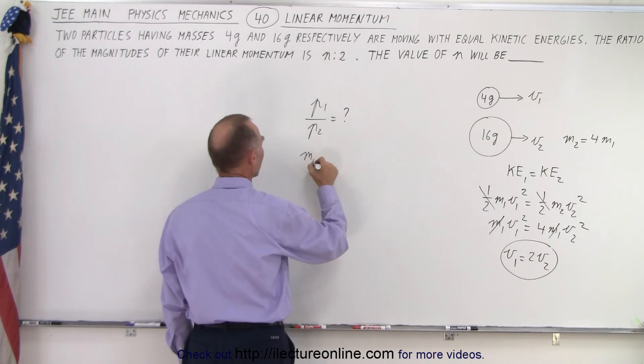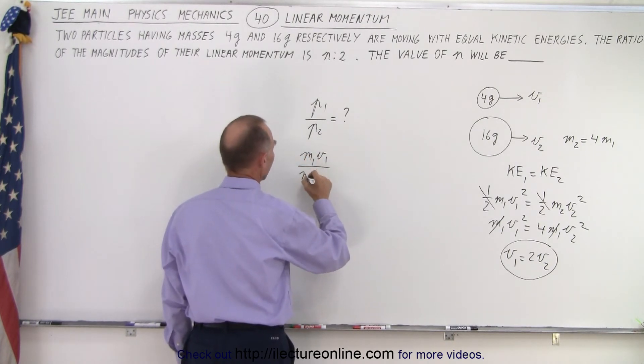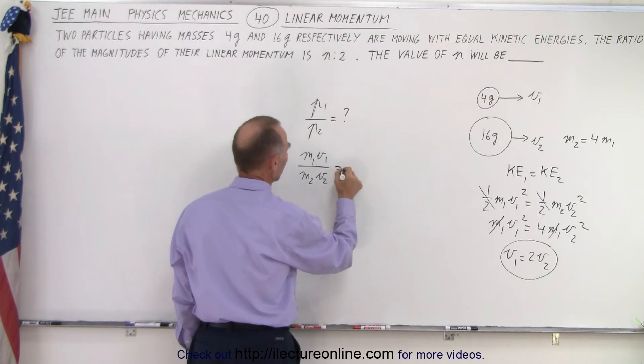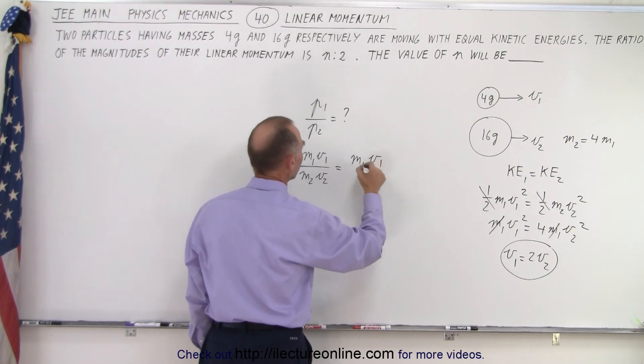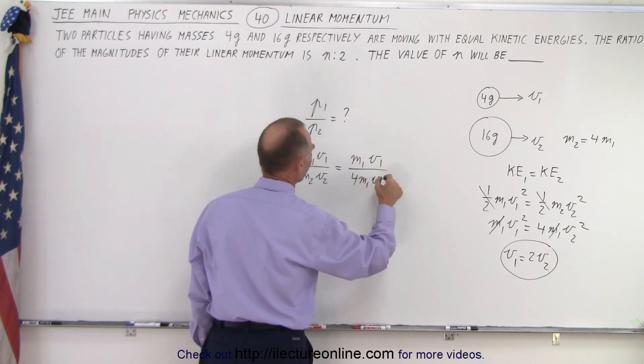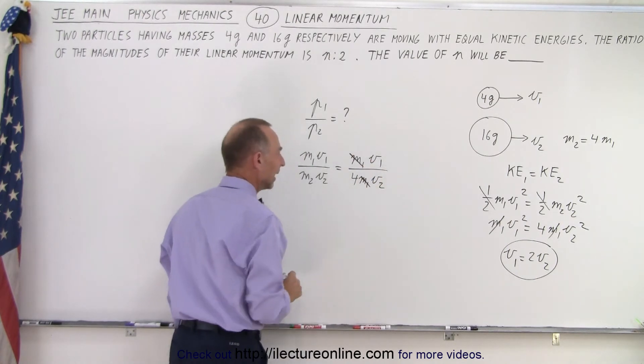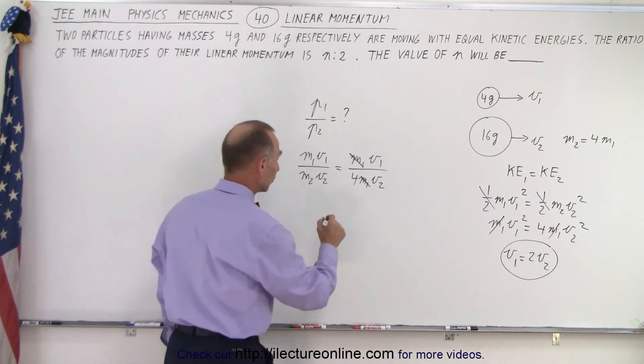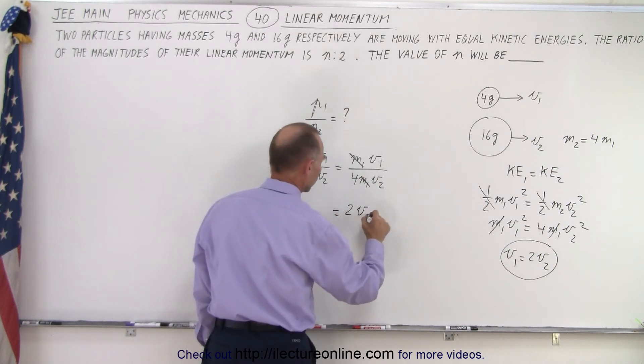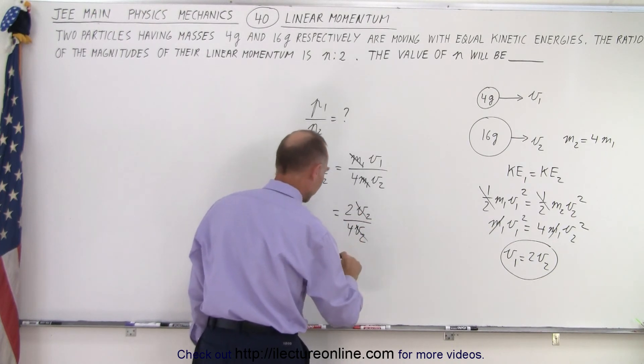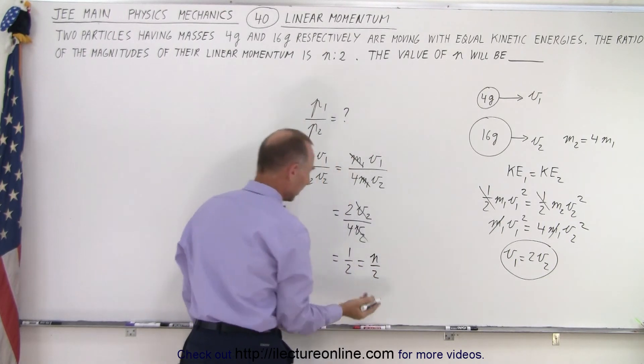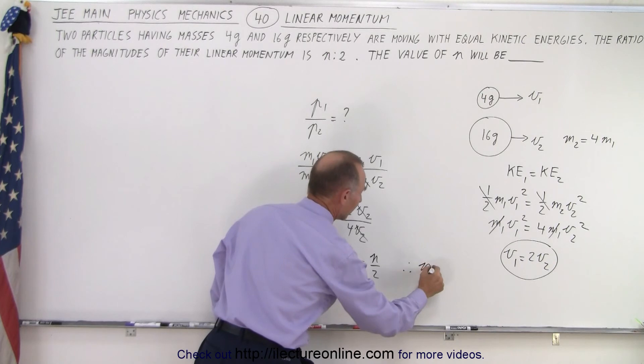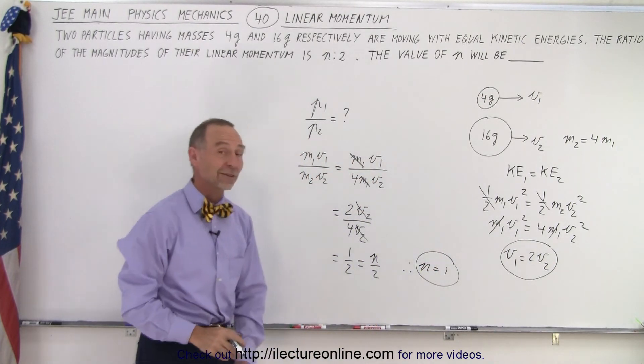We know that linear momentum is m1 v1 divided by m2 v2. And of course, we realize that m2 is 4 m1. So we get m1 v1 divided by 4 m1 v2. And then the m1 cancels out. And then we realize that v1 equals 2 v2. So this is equal to 2 v2 divided by 4 v2. And of course, the v2s cancel out and 2 divided by 4 is equal to 1 divided by 2. And we're going to set that equal to n over 2. And then it's clear to see that n must equal 1, and that is the correct answer in this case.